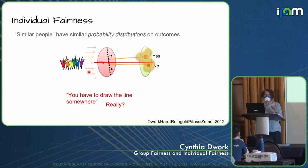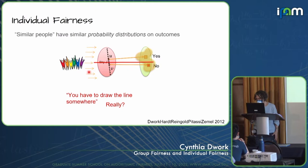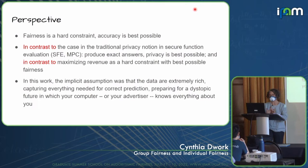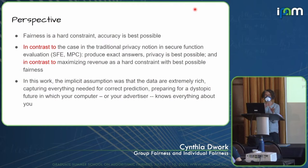You want the distance between the distribution assigned to u and the distribution assigned to v — whatever notion of distance you use, and there are various choices we'll discuss — to be bounded by the metric distance between u and v.